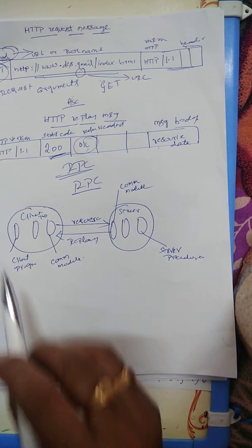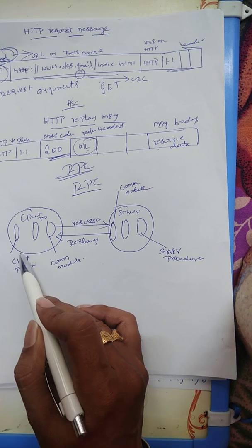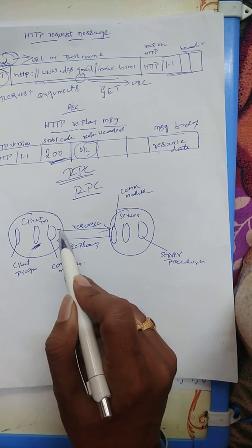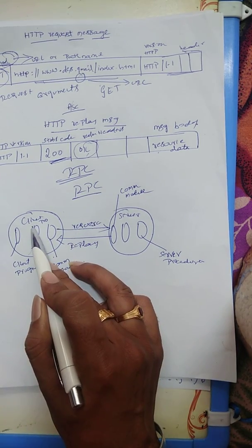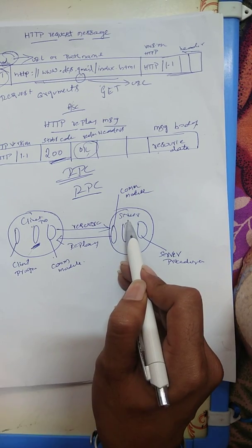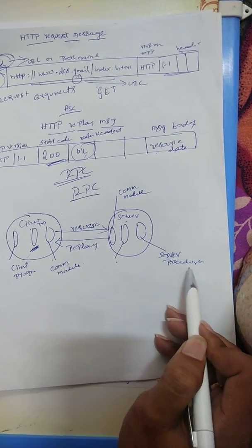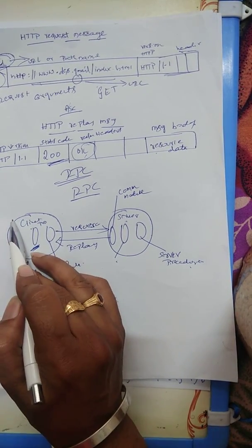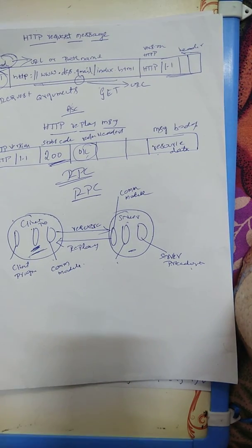Now we move on to the implementation of RPC. This is the client program and client stub procedure. This is the communication module — we send the request and receive the reply. This is the client procedure process, this is the server procedure, this is the dispatcher and service procedure, and finally this is the server stub procedure.